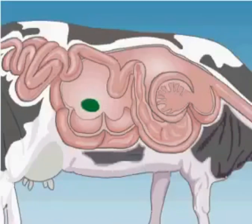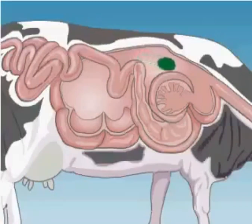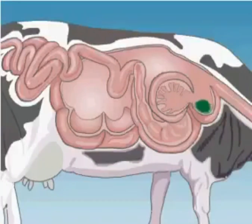The cud fermented by microorganisms is moved to the second chamber, the reticulum, where it is further ground and formed into balls. These are regurgitated by antiperistalsis into the mouth to be chewed again.